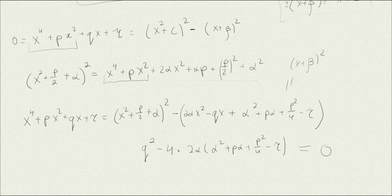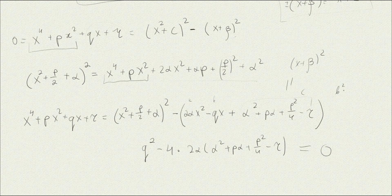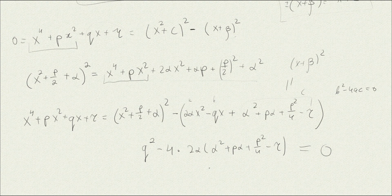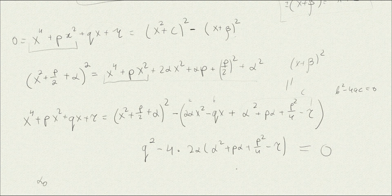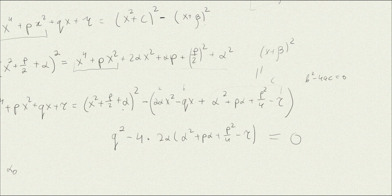This discriminant condition is just b squared minus 4ac equals zero for the quadratic in x — where b is minus q and c is the constant term. This gives us a cubic equation in alpha that we need to solve. For the cubic equation, any root is sufficient. Any root alpha-zero that we pick will give us the desired decomposition into a difference of two squares. Every cubic equation has at least one real root, so it may be convenient to pick a real one, though it doesn't matter.